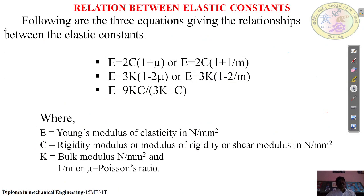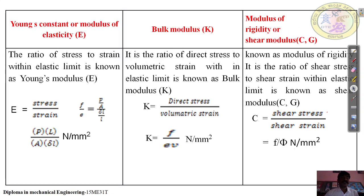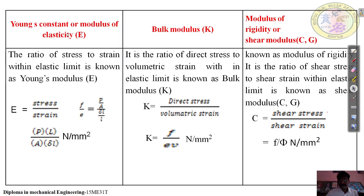These are the relations between elastic constants. The following are the three equations giving the relation between elastic constants. E is equal to 2C into (1 plus mu), where E is Young's modulus, C is rigidity modulus, and K is bulk modulus. These three equations are used in your problems. For your syllabus, there is no proof — you just have to remember them.